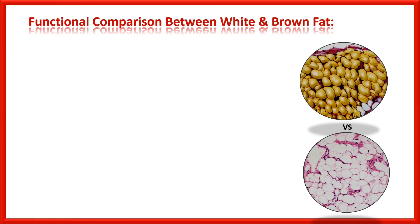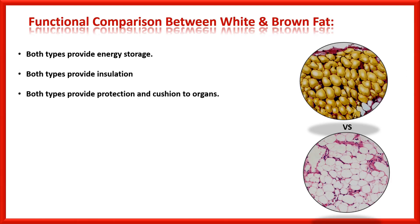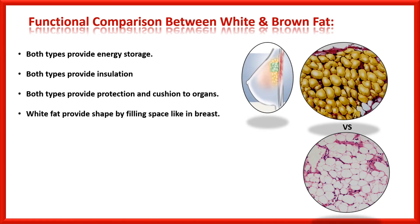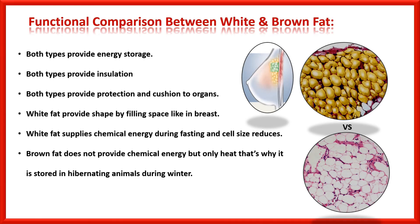Functionally comparing white and brown fat: both types provide energy storage, insulation, and protection and cushioning to organs. White fat provides shape by filling space, such as in the breast, and supplies chemical energy during fasting, causing cell size to reduce. Brown fat does not provide chemical energy but only heat — that is the major difference — and that is why it is stored in hibernating animals during winter.